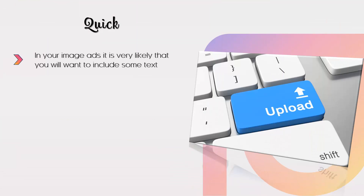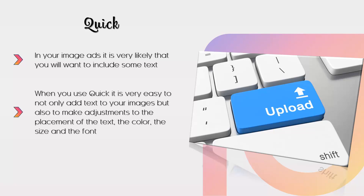In your image ads, it is very likely that you will want to include some text to persuade the Instagram user to click through your ad. If you are not adept at image editing, then you can do this quickly and easily by using a great little app called Quick. With Quick, it is very easy to add text to your images and make adjustments to the placement, color, size, and font. There is a free version that will cover most image edits, and if you want more features, you can purchase them within the app.